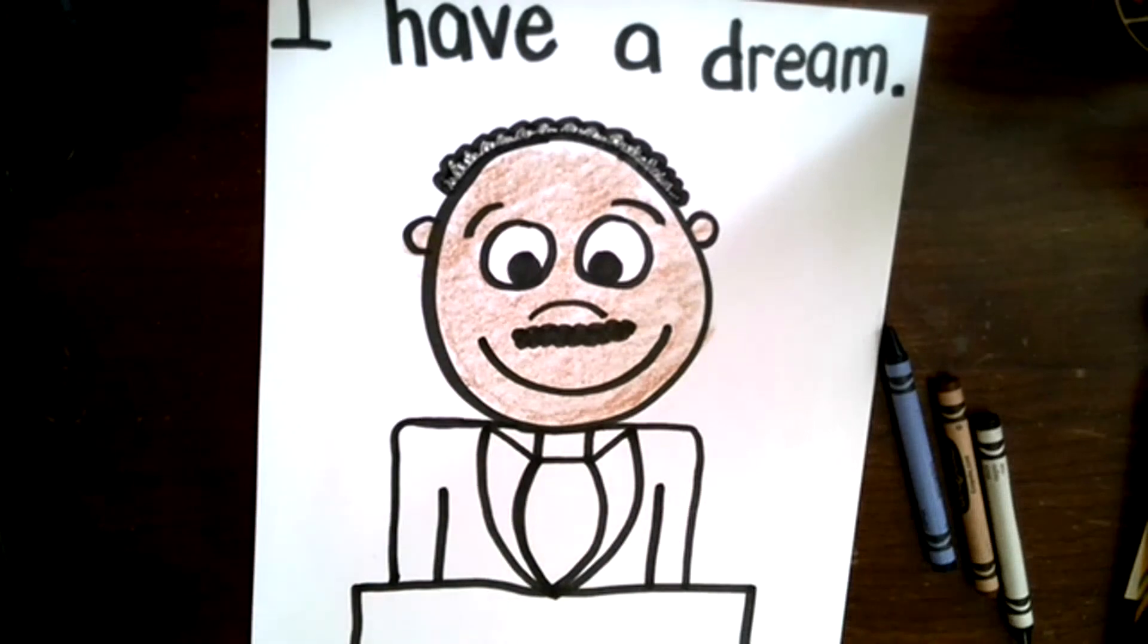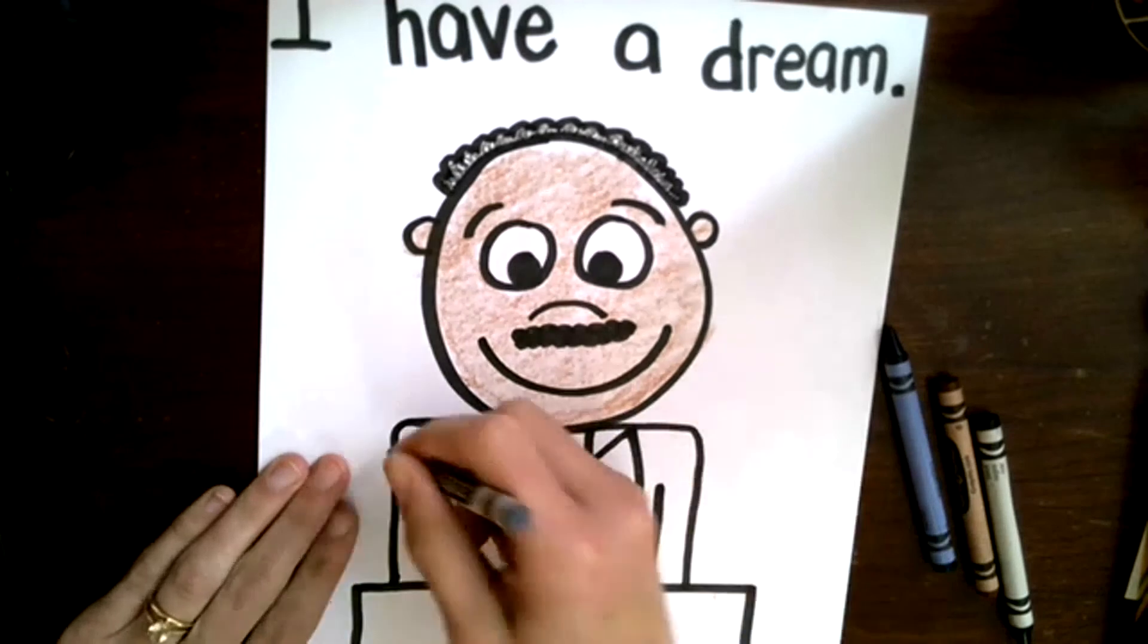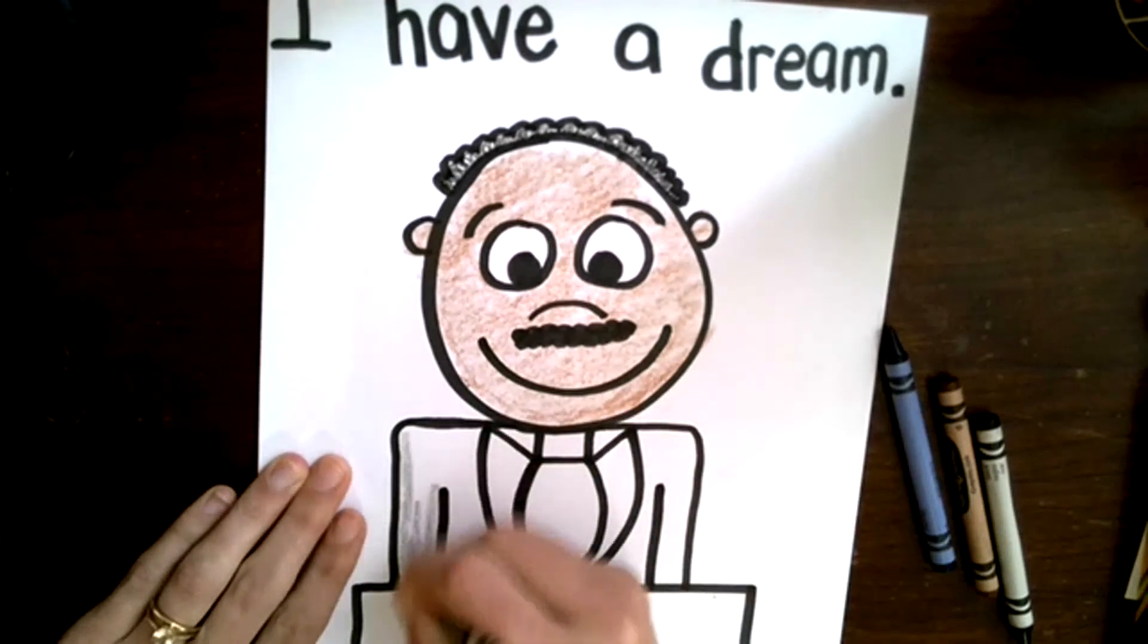Oh, you know what, I forgot. I'm also going to need a gray crayon. Don't forget a gray crayon. We might as well use that right now. So our gray crayon, we're going to color in Martin Luther King Jr.'s suit gray.